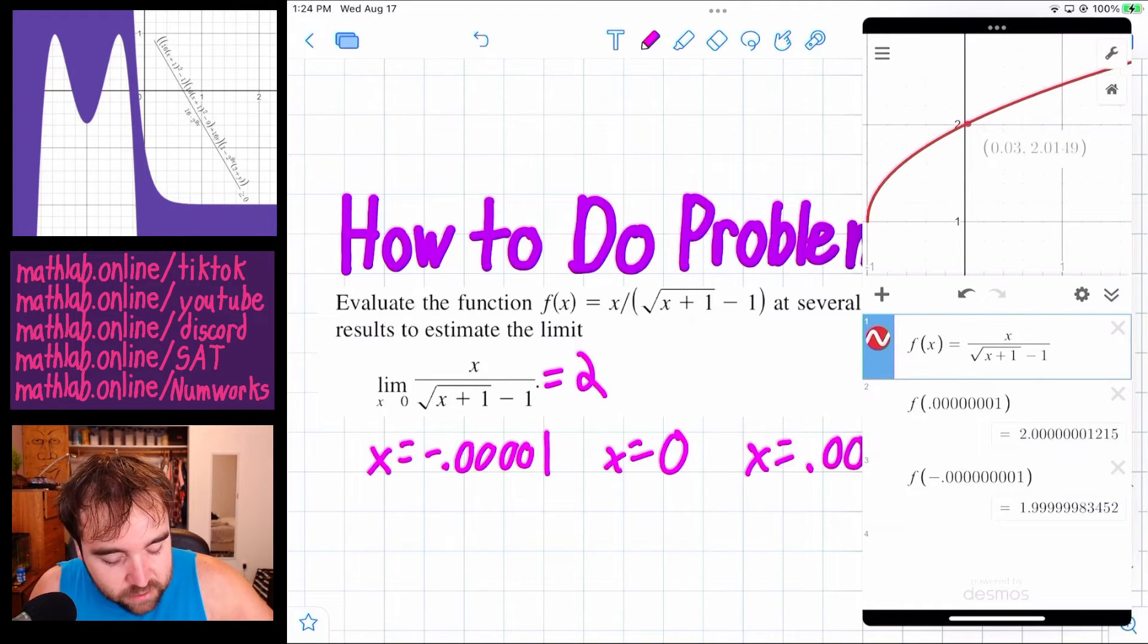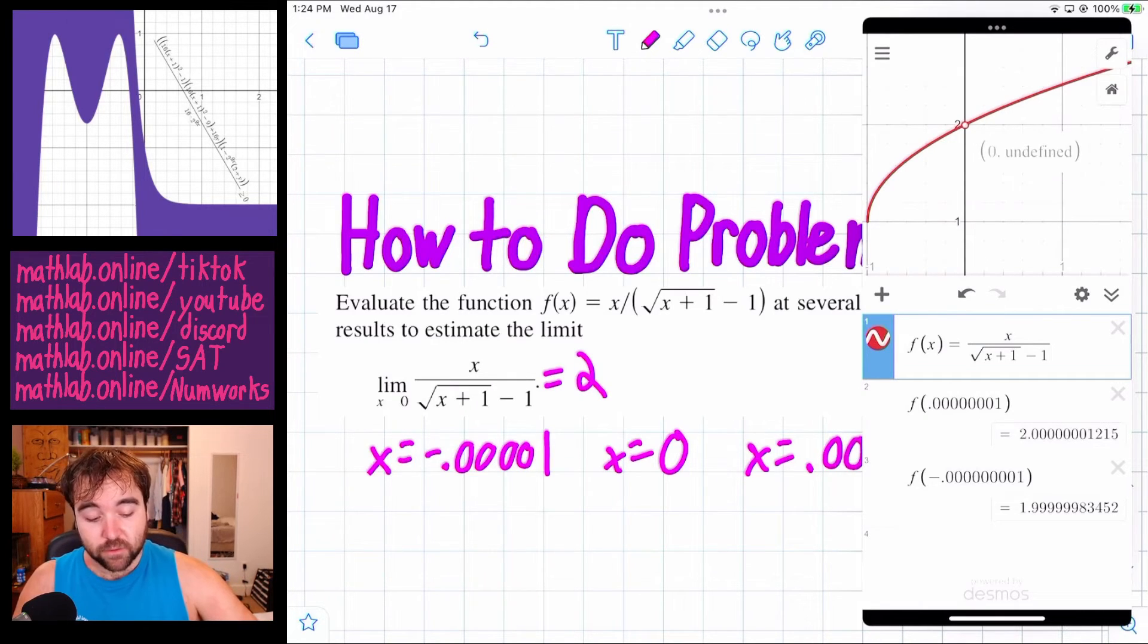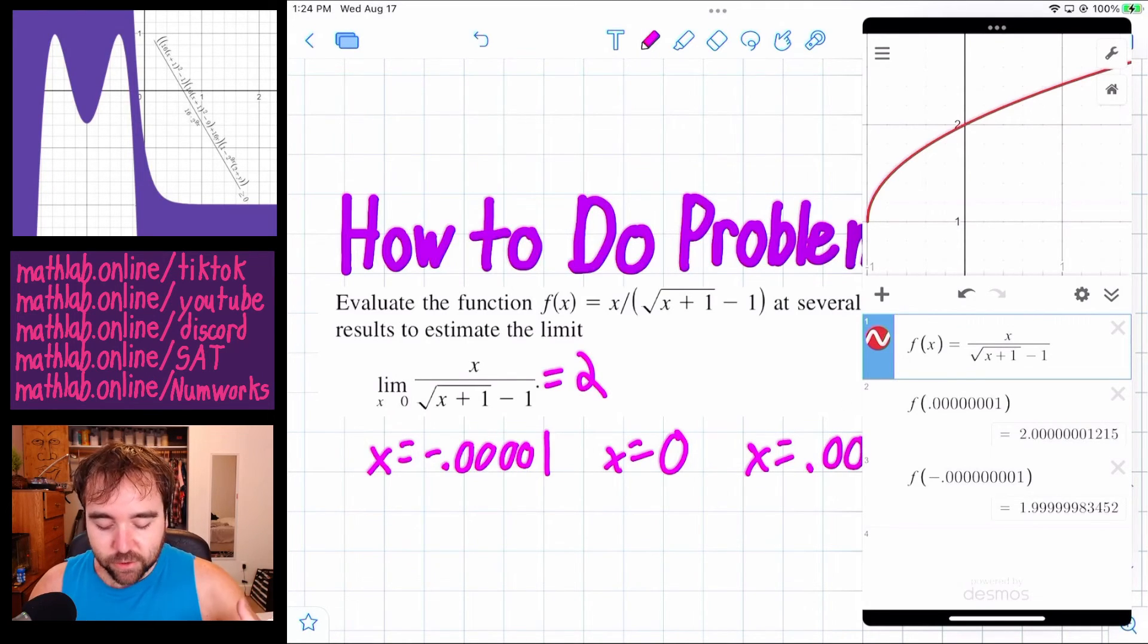But that doesn't change the fact that that's not what we were trying to find here. We weren't trying to find f of 0. f of 0 is undefined. But the limit as x approaches 0 of f of x is 2. And we can see that by plugging in numbers really close to 0, and we can see that by just looking at the graph.